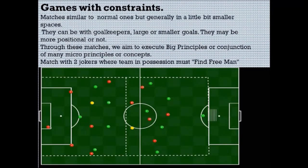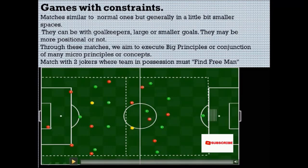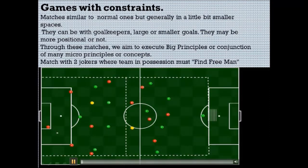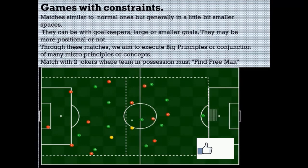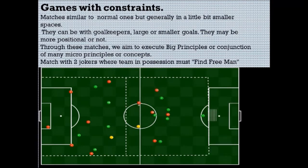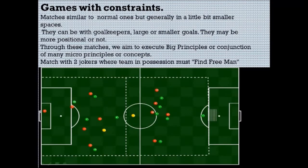Games with constraints can include jokers outside, another team waiting, or in this case just a normal match with two jokers. The main principle here is to find the free man — there's always going to be one player free because of the two jokers with the playing position. Cruyff, for example, when he was in Barcelona, would finish most sessions with a 7v7 plus a joker, working this a lot. Games with constraints are matches similar to normal ones but generally in a slightly smaller space — they can include goalkeepers, larger or smaller goals, and may be more positional or not. Through these matches we aim to execute big principles combining many micro-principles or concepts.